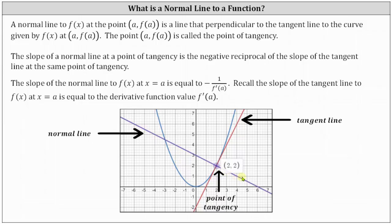The purple line is the normal line to the curve at the point of tangency. Notice how the purple normal line is perpendicular to the red tangent line at the point of tangency.